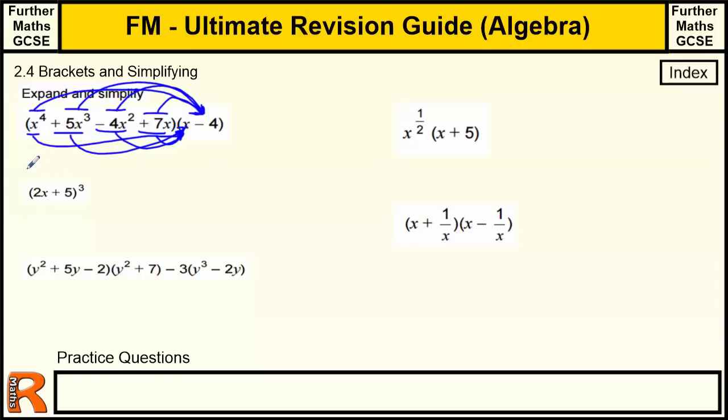So we've got 4x⁴ times x is x⁵. 5x³ times x is 5x⁴. Minus 4x² times x is minus 4x³. All we're doing is increasing the power of the x by 1. So that becomes x². That's the first lot times by the x. Then we've got the same ones again times by the minus 4. So minus 4x⁴, minus 4 times 5 is minus 20x³, minus 4 times minus 4 is plus 16x², and minus 4 times 7 is minus 28x.